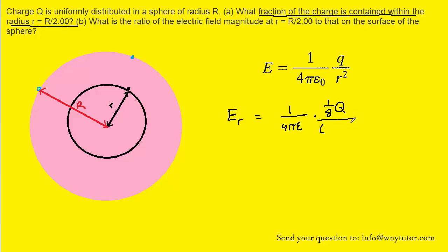over the radius of the smaller sphere squared. Now the smaller sphere had a radius of uppercase R over 2 squared. We can go ahead and actually square that out to make it R squared over 4.